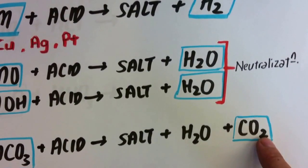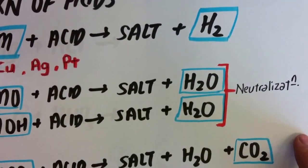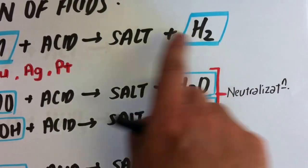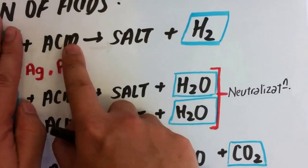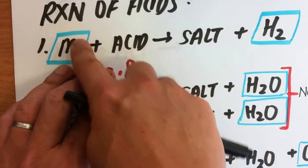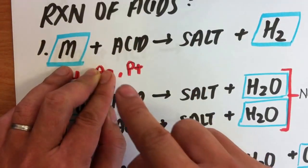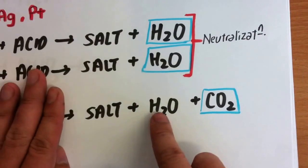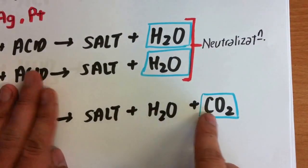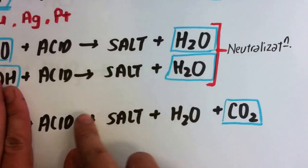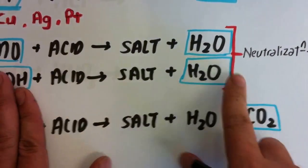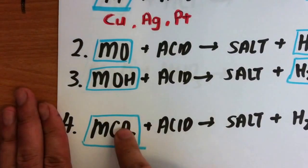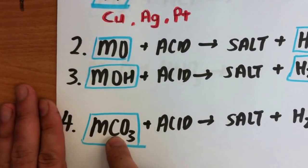Based on the reaction, if you know that hydrogen gas is being formed when there is a reaction with acid, we can conclude that there is a metal involved. If you know that you get three things from a reaction with acid, carbon dioxide especially, we can also conclude that there is a metal carbonate involved.